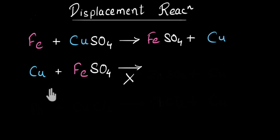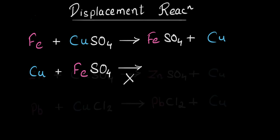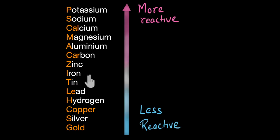You might be wondering, how do I know which element is more reactive than the other? Scientists have done a lot of experiments and prepared a list — organizing most elements in order of their reactivity. This is the reactivity series. It doesn't have all elements, but the most commonly used ones. In this series, the element higher up is more reactive than one lower in the series.